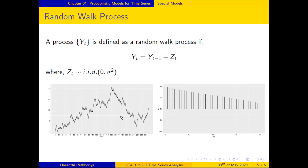Here are the time series plot and ACF for a random walk process. Looking at the time series plot, you can clearly see a change in the mean level, which means it cannot be a stationary process. In the ACF, there are a large number of lags with significant autocorrelation coefficients, and the autocorrelation function only approaches zero after a large number of lags.